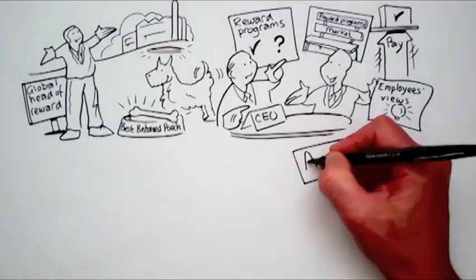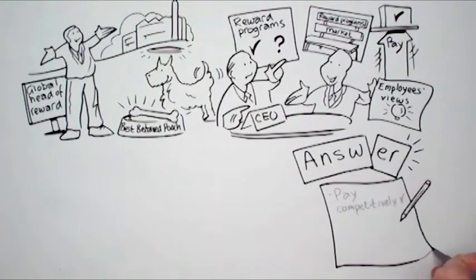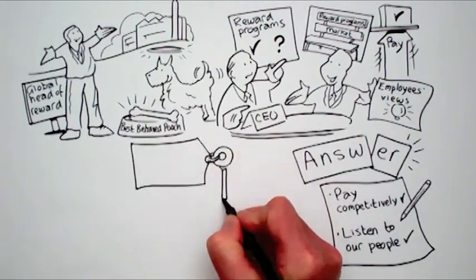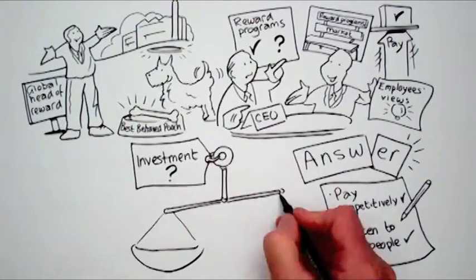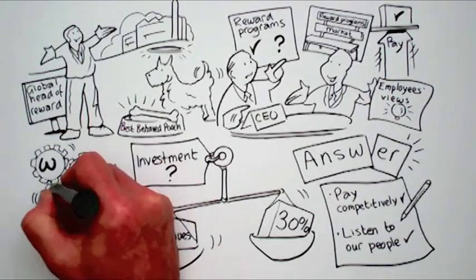But the CEO says, that's only part of the answer. It tells me that we pay competitively and we listen to our people. But it doesn't tell me if the investment we make in them is paying off. And that means 30% of our total revenue has gone to something we don't know is working.